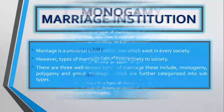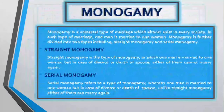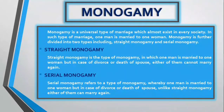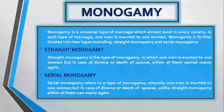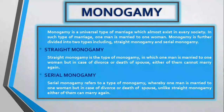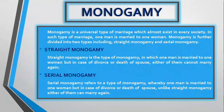Monogamy is a universal type of marriage which almost exists in every society. In this type of marriage, one man is married to one woman. Monogamy is further divided into two types: straight monogamy and serial monogamy. Straight monogamy is a type in which one man is married to one woman, but in case of divorce or